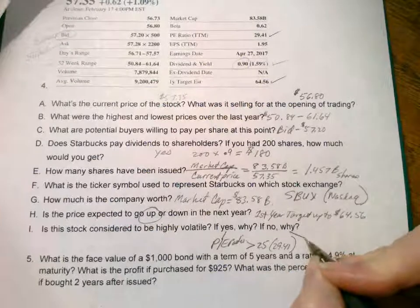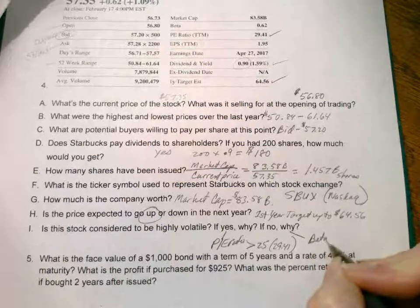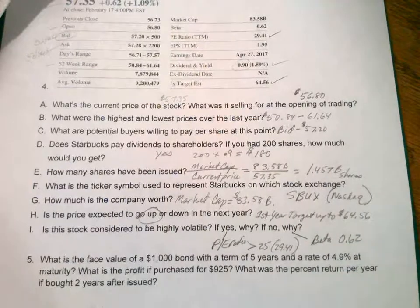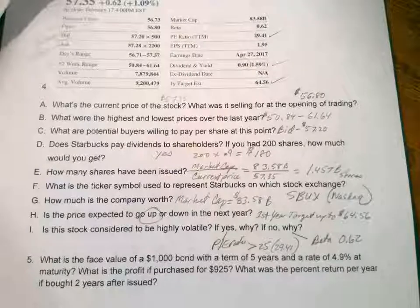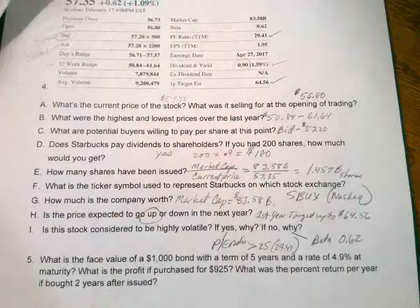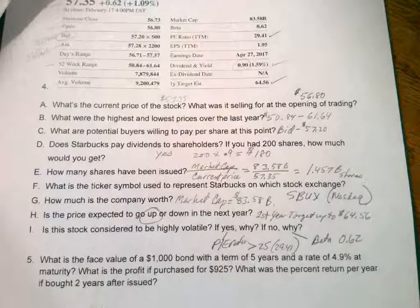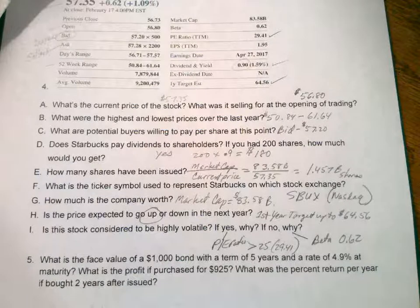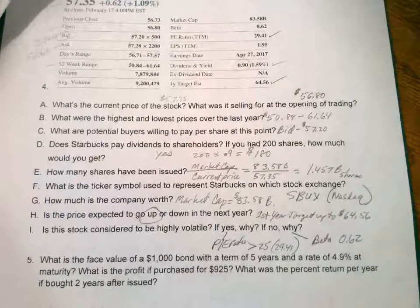But if you look at the beta, it's 0.62. Remember, a beta closer to one means stable relative to the overall market, and lower numbers mean even more stable.